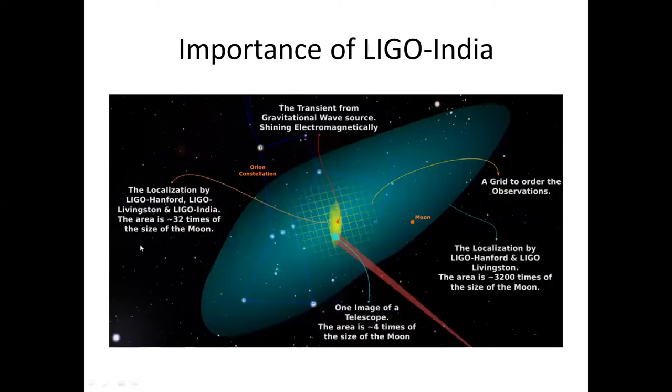As you can see here, we can see a huge green patch in this slide. This green patch is called the area of localization of LIGO Hanford and LIGO Livingston. What this means is that when these two observatories detect gravitational waves, its source can lie anywhere in this green patch. The area of this green patch is 3200 times the size of the moon. The moon is also shown here for reference.